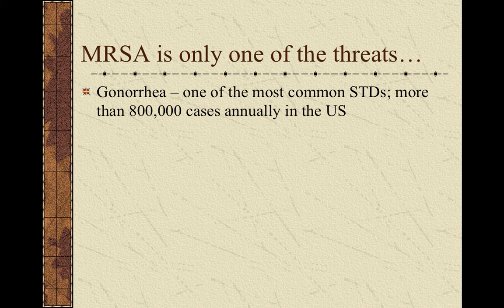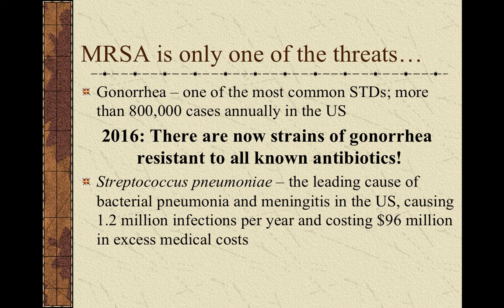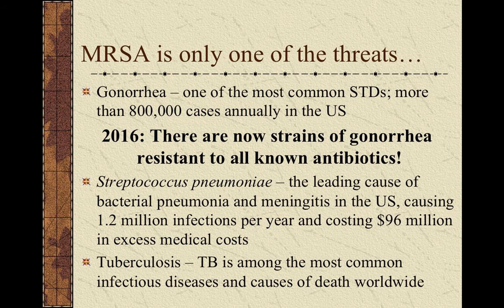MRSA is only one of the problems. One of the most urgent threats according to the Centers for Disease Control is antibiotic-resistant gonorrhea. Gonorrhea is already one of the most common sexually transmitted diseases; in the past many cases could be easily cured with antibiotics — not anymore. Fewer and fewer antibiotics work against gonorrhea, and there are strains now resistant to every possible antibiotic known to medicine. It is only a matter of time before these become more common. Another concern is bacterial pneumonia and, worldwide, tuberculosis — without effective antibiotic treatment the death rate is likely to increase.